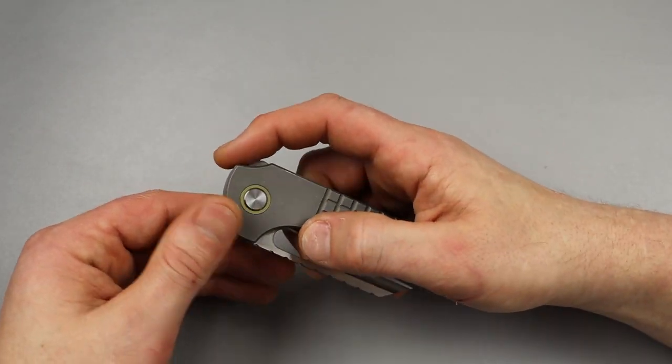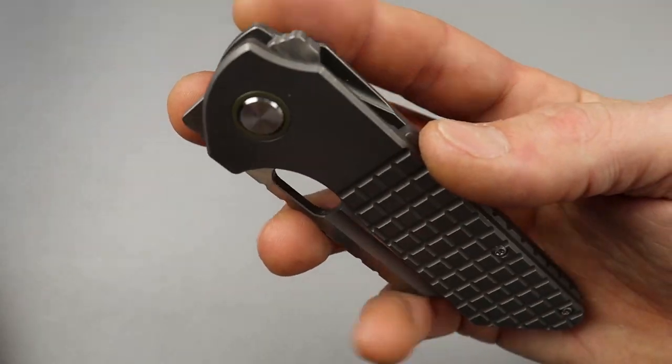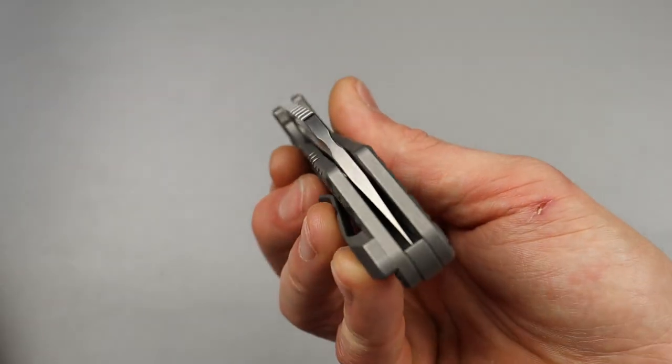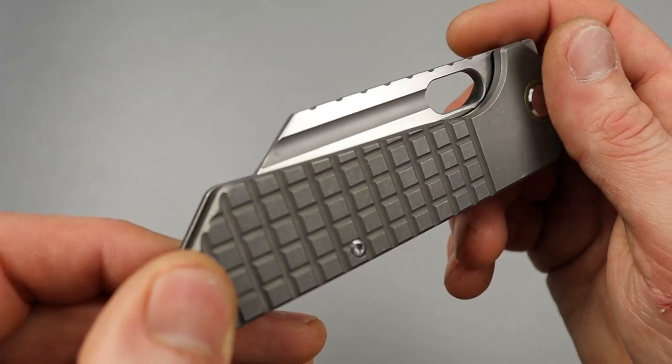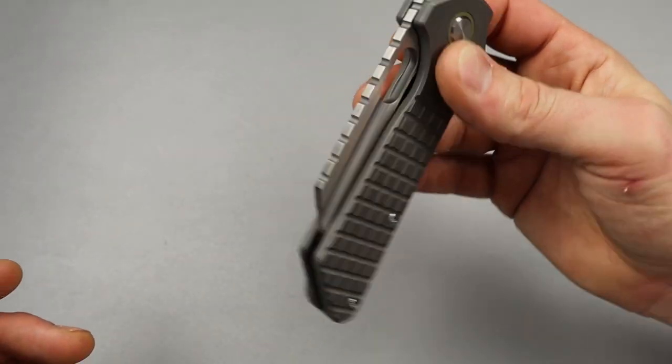But all in all, we have 156 ways to deploy this knife. As you can see, lots of forms of deployment. You have the fuller here that has like a bead blasted finish inside the fuller. So you can reverse flick off of that fuller.